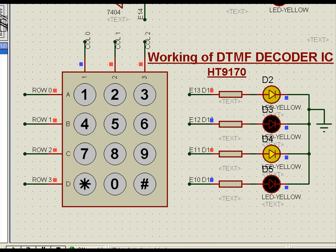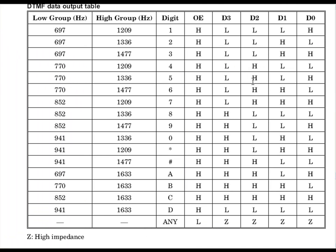And that is how the IVRS — Interactive Voice Response System — also works, where the tone is converted to the particular number in binary. This table is universal throughout the world, and that is why anywhere we use any number, these are the frequencies which generate the dual tone, and the tone decoder decodes it. There is an arrangement for a tone encoder also, which we will discuss separately in the tone encoder section. Thank you.